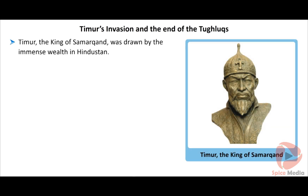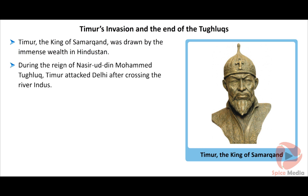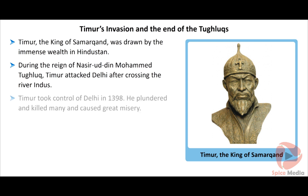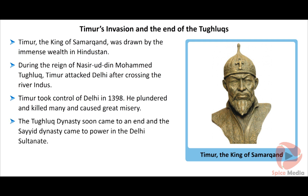Timur, the King of Samarkand, was drawn by the immense wealth in Hindustan. During the reign of Nasruddin Muhammad Tughlaq, Timur attacked Delhi after crossing the river Indus. The Sultan and his Prime Minister fought back. Timur conquered them and took control of Delhi in 1398. He plundered and killed many and caused great misery. The Tughlaq dynasty soon came to an end and the Syed dynasty came to power in the Delhi Sultanate.